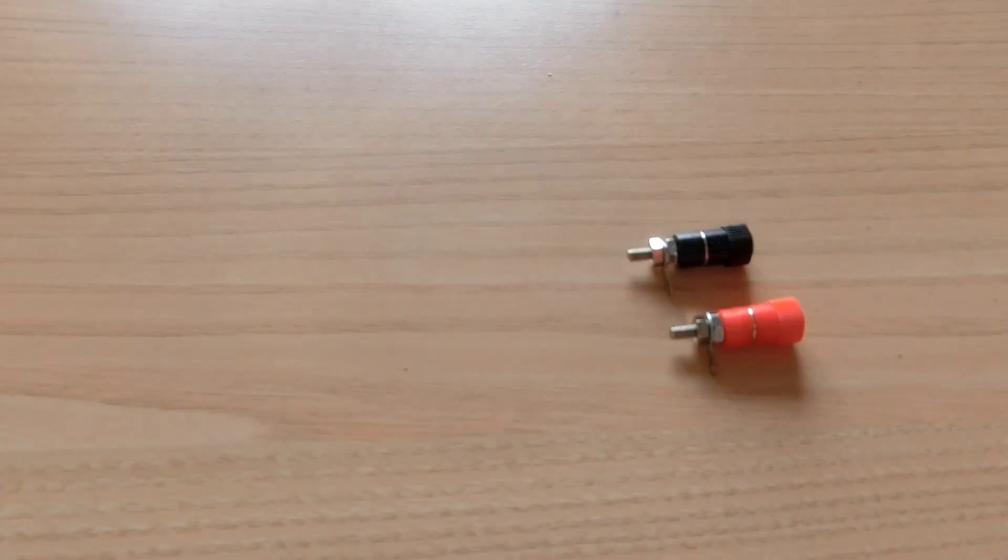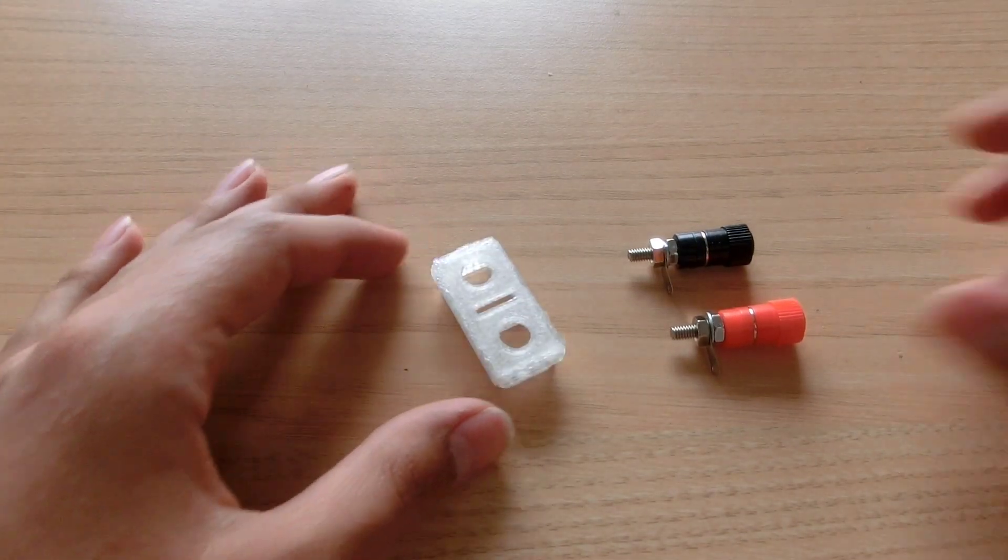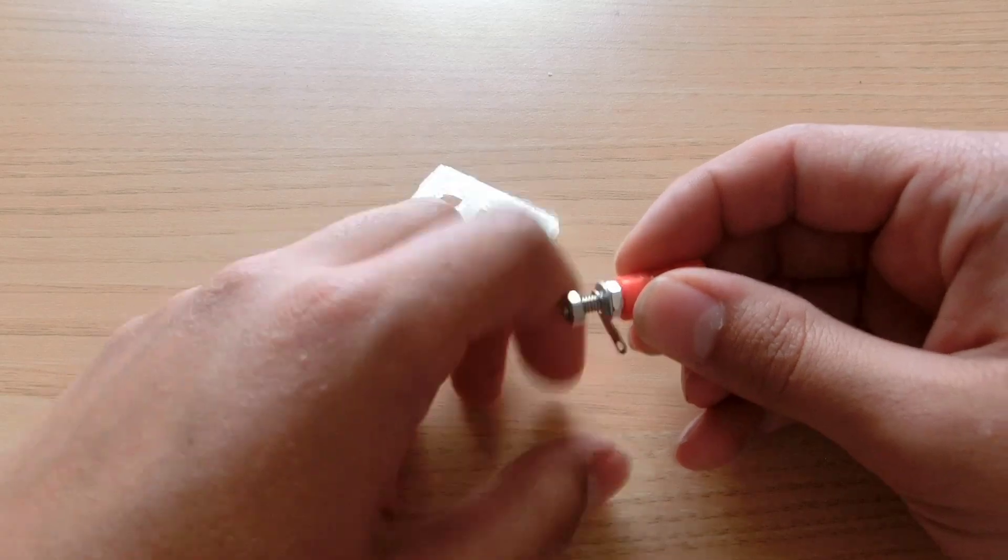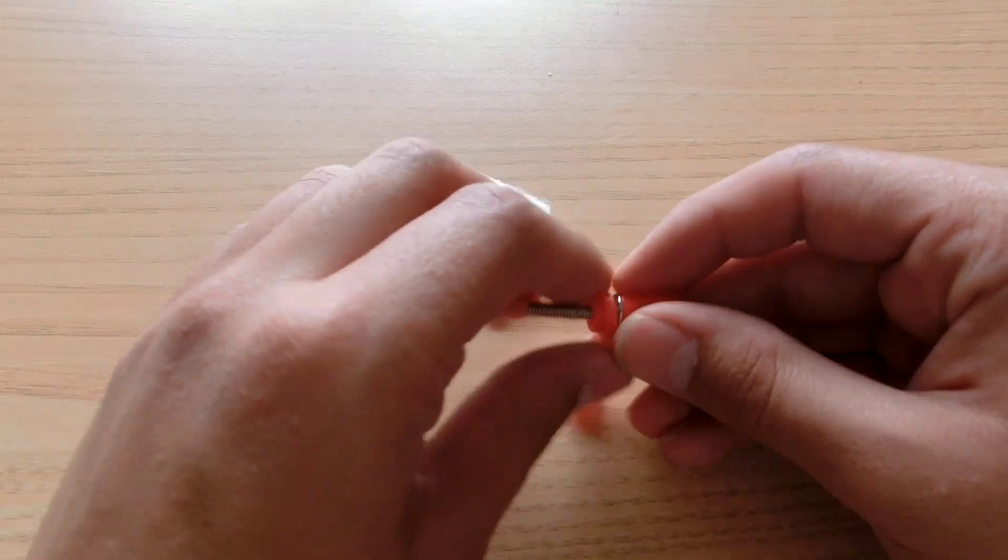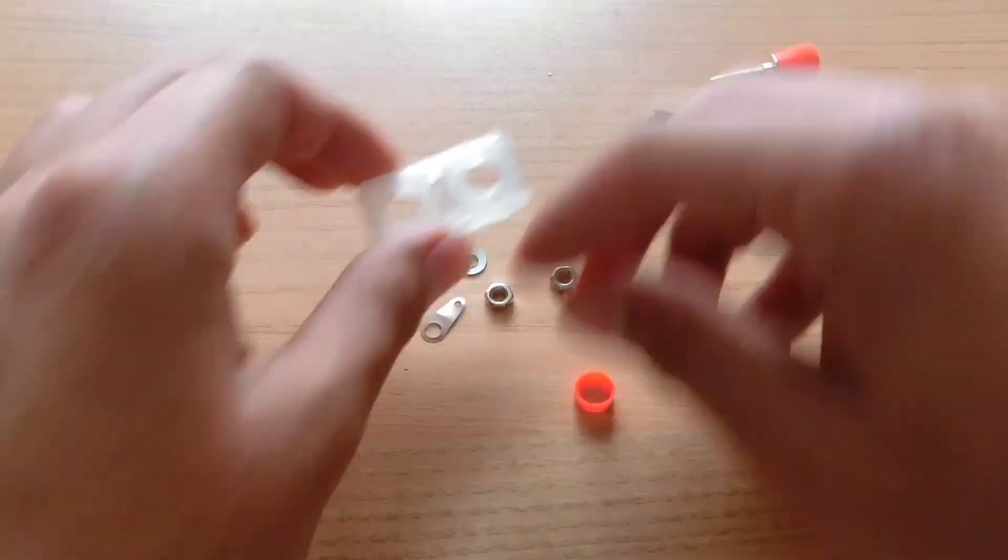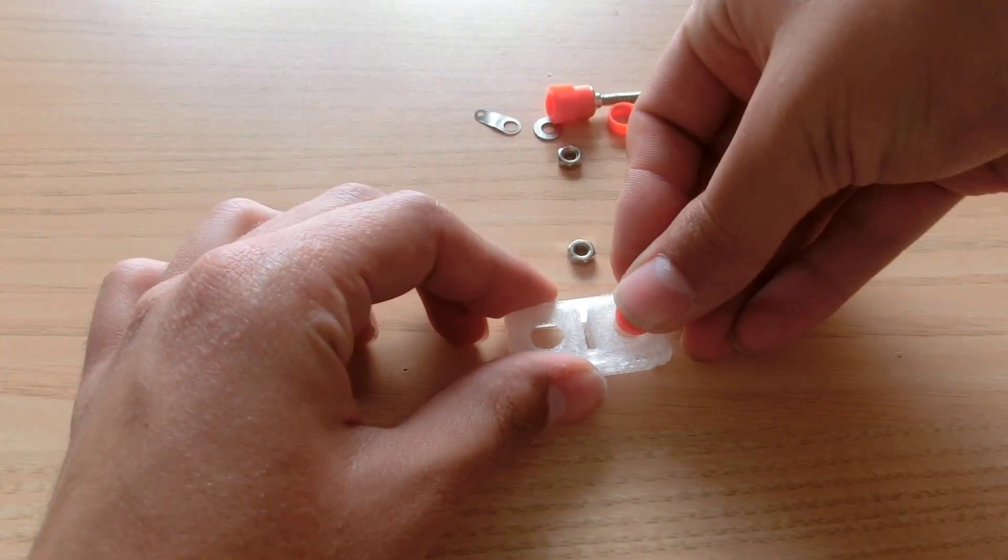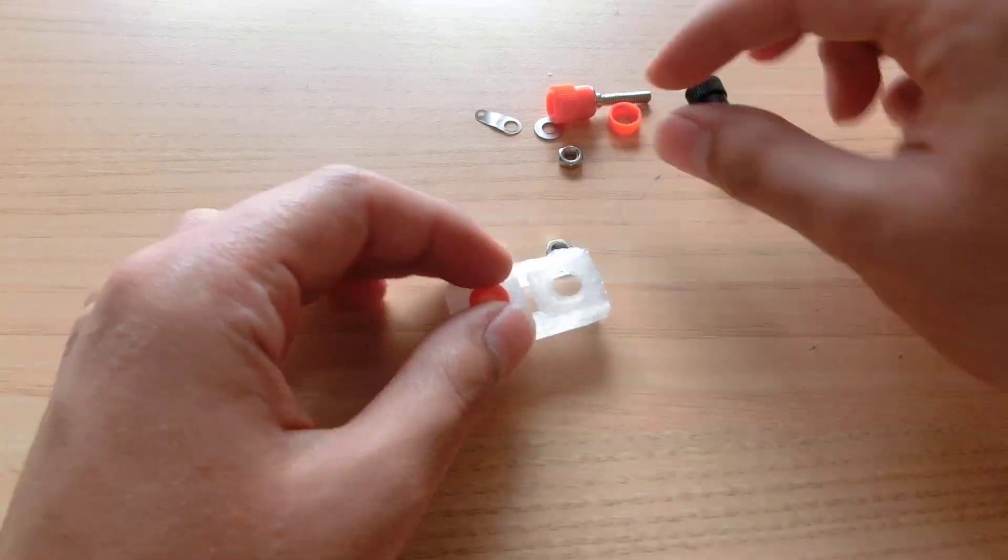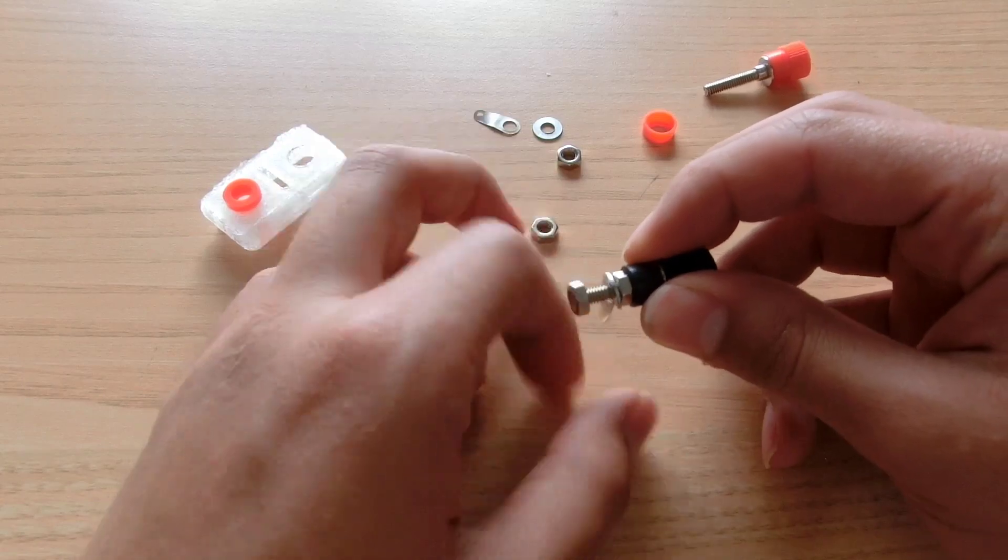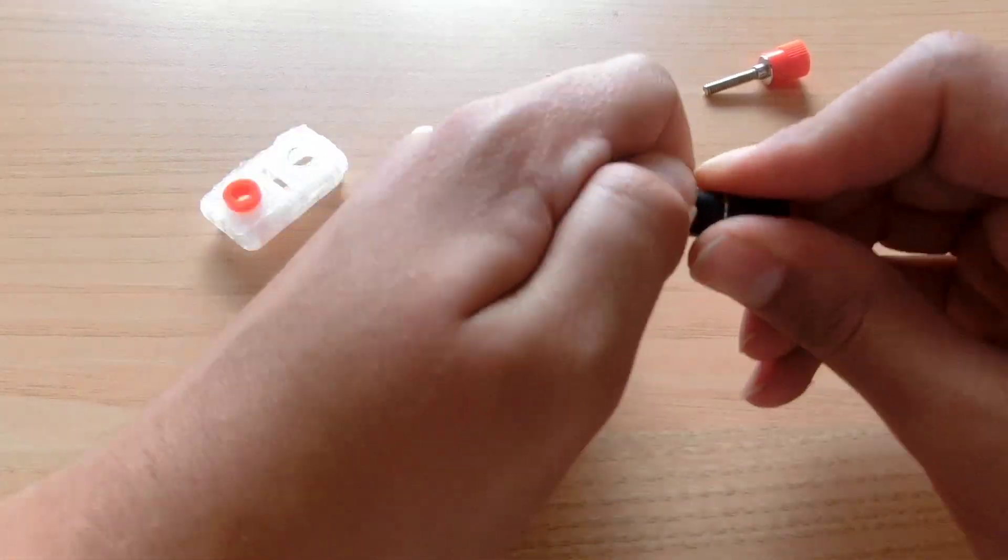Take your battery cover and two female banana jacks of any type as long as they mount with a nut. Start disassembling the jacks and take the small insert and push it inside the hole in the 3D printed part. Do the same for the other side.